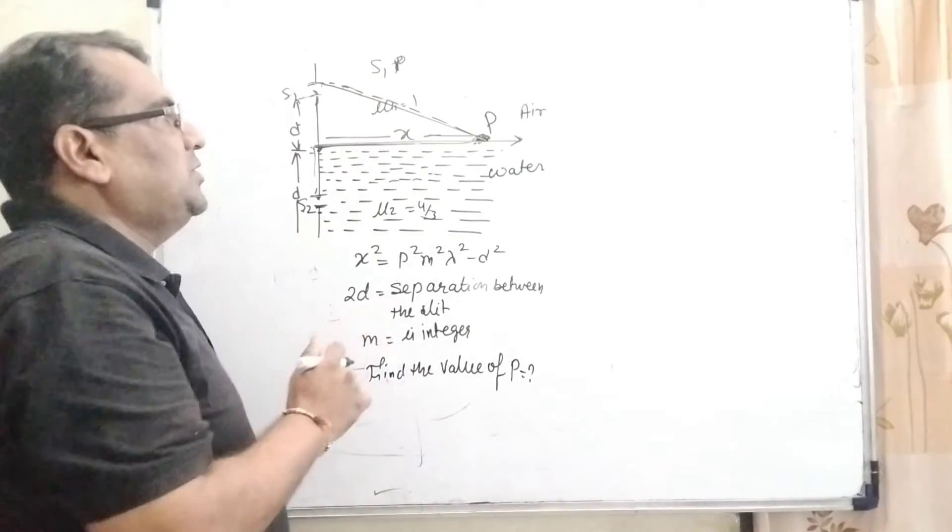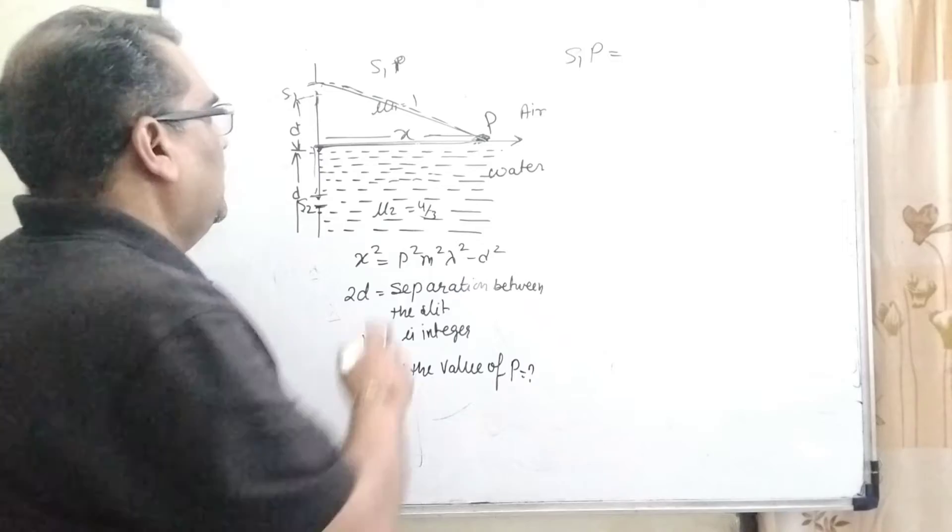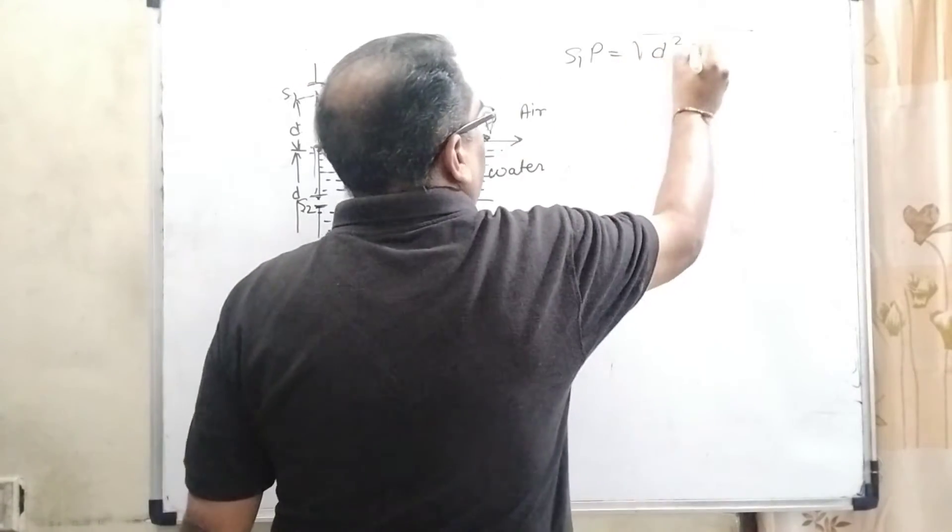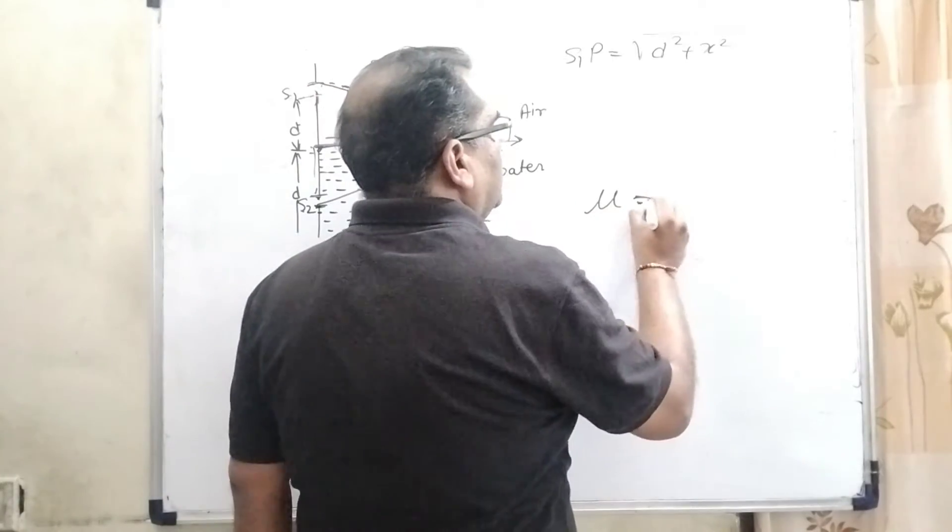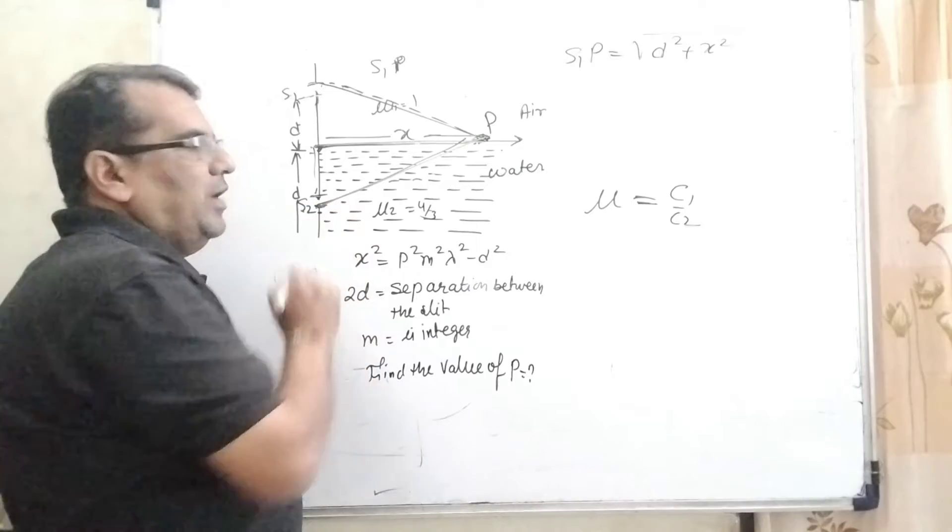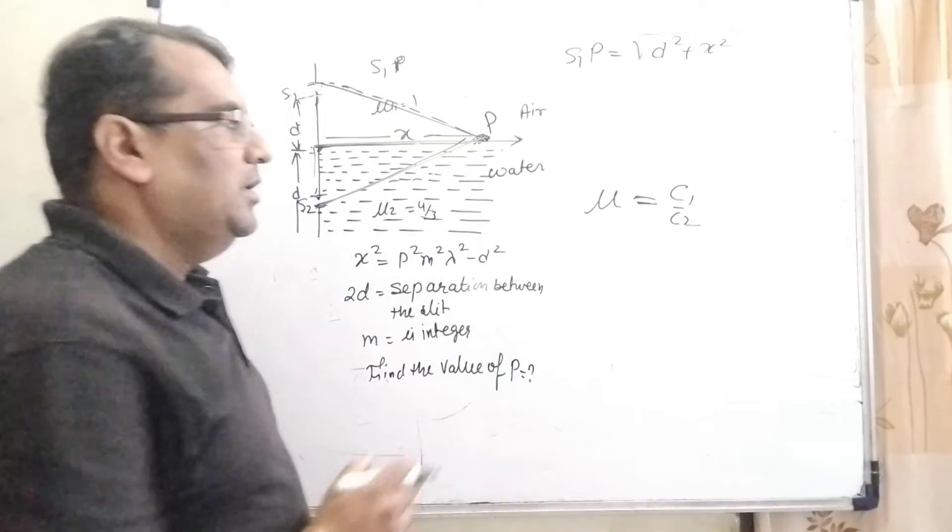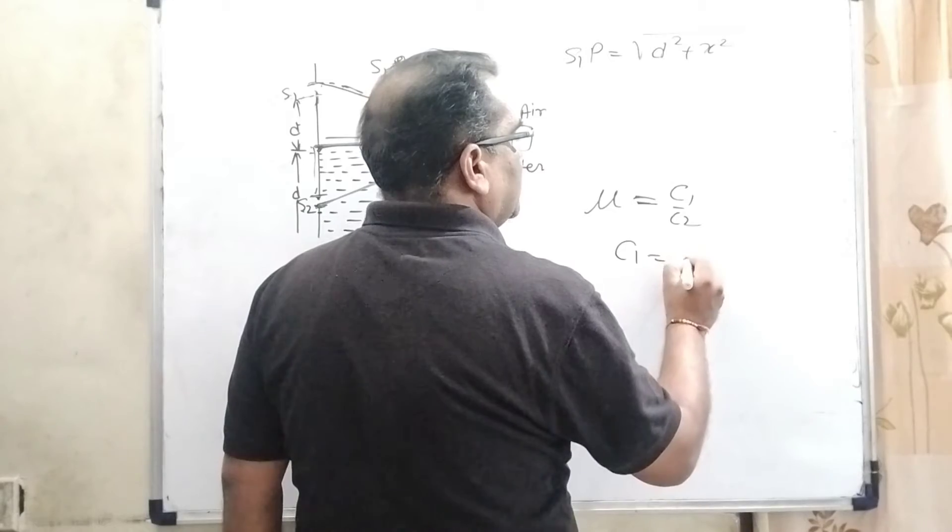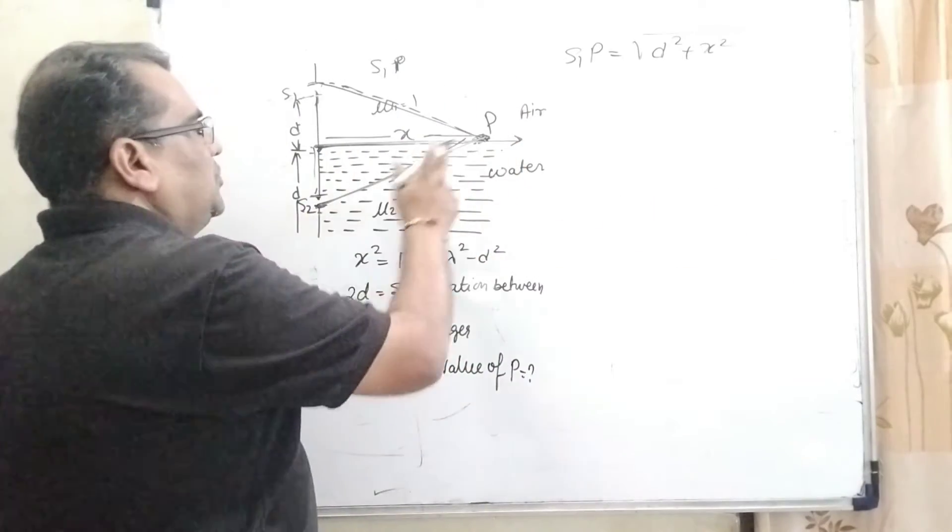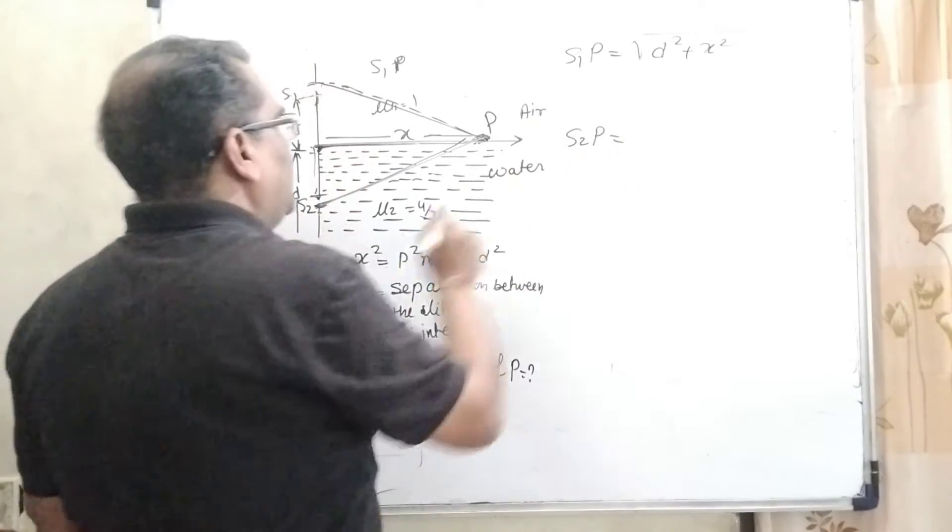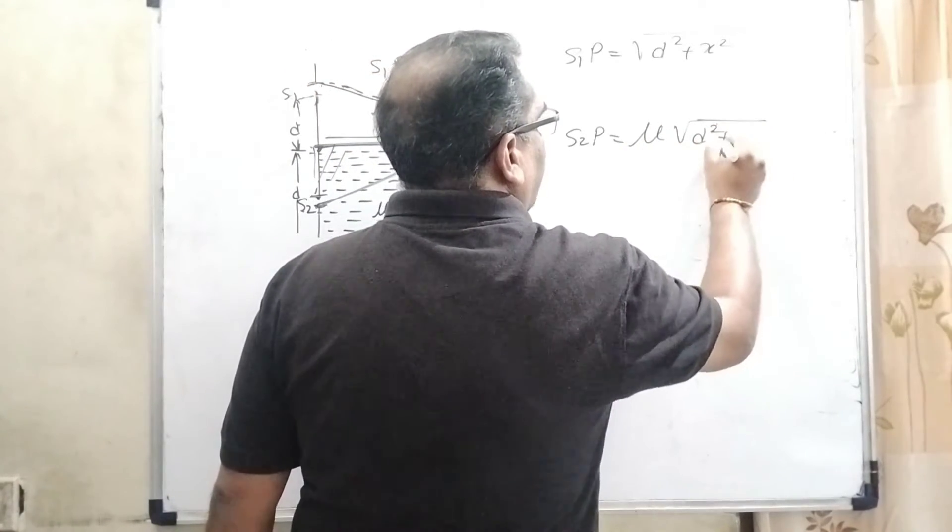So let us first find out S1P, the distance from slit S1 to point P. By using Pythagoras theorem, it's √(d² + x²). And for S2P, we know that when we need to find any observation distance in a medium, we can use this formula: μ = C1/C2, where C1 is speed of light in air and C2 is speed of light in the medium. Then C1 can be written as C2μ. So we are using this concept to find S2P.